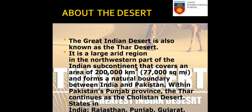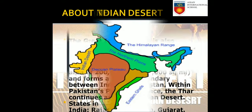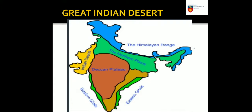The Great Indian Desert is also known as the Thar Desert. It is a large arid region in the northwestern part of the Indian subcontinent that covers an area of 2 lakh square kilometers, equal to 77,000 square miles, and forms a natural boundary between India and Pakistan. Within Pakistan's province, the Thar continues as the Cholistan Desert. The states of Rajasthan, Punjab, and Gujarat comprise the Thar Desert in India.